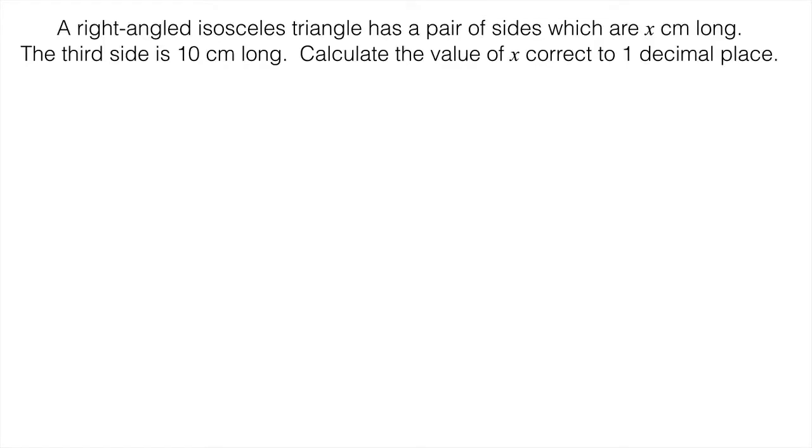This is another word question without a diagram. We're told that we have a right-angled isosceles triangle that has a pair of sides which are x centimeters long. The third side is 10 centimeters long, and we have to calculate the value of x correct to one decimal place.